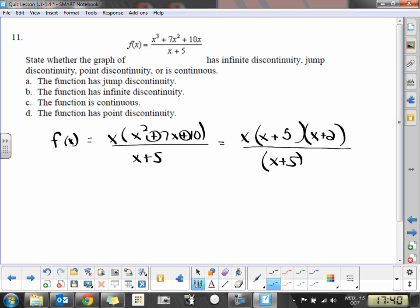Well this is called removable discontinuity. If you remember, if you have the same factors stacked on top of each other, it's going to be a hole in your graph, which means it's a removable or point discontinuity. So the function has jump discontinuity? No, it's not that. The function has infinite discontinuity? No, there's no vertical asymptotes. The function is not continuous, it has point discontinuity.